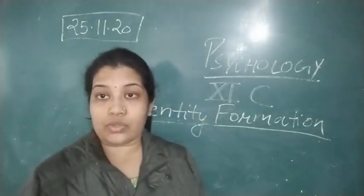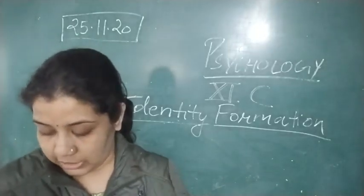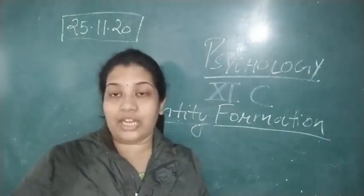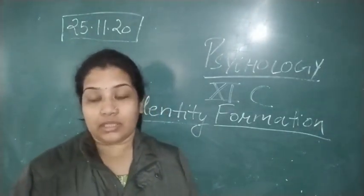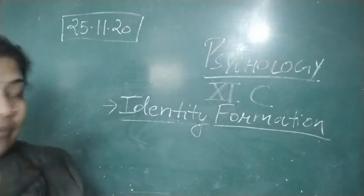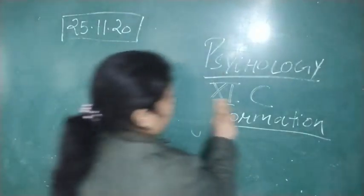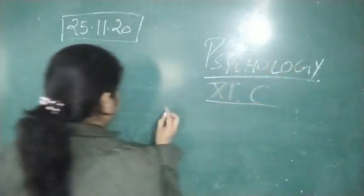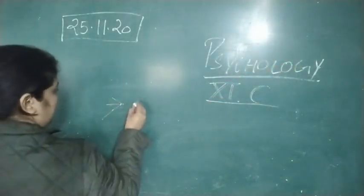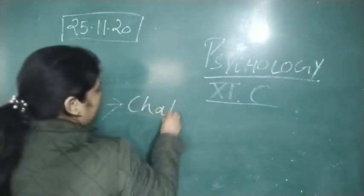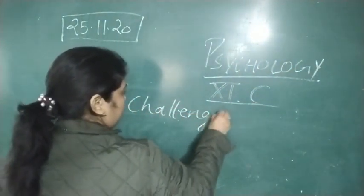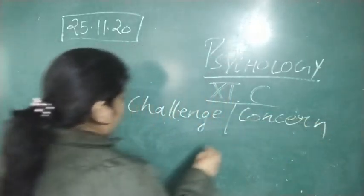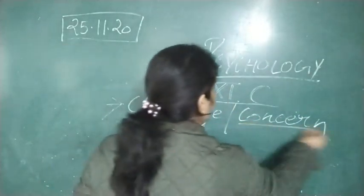Adolescence also poses some challenges. We will discuss three major concerns. We have already discussed identity formation. Now our discussion is about challenges and concerns that adolescents face. The first is eating disorder, the second major challenge is substance abuse, and the third is delinquency.